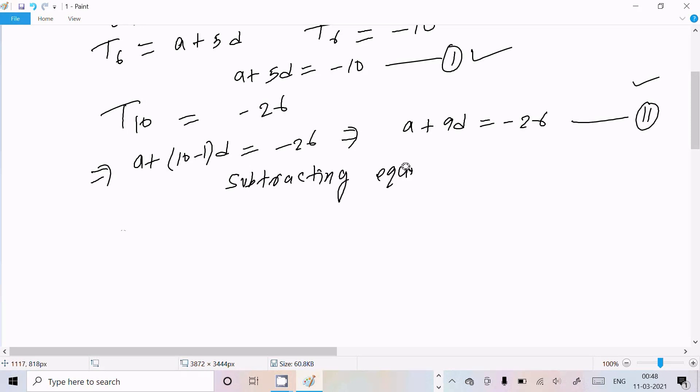So equation 2 is A + 9D = -26, and equation 1 is A + 5D = -10. Here A minus A cancels.